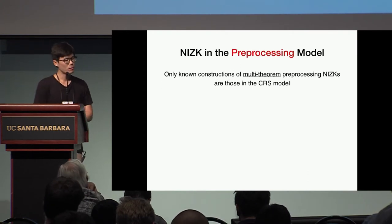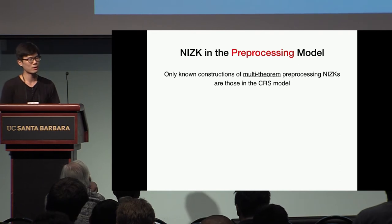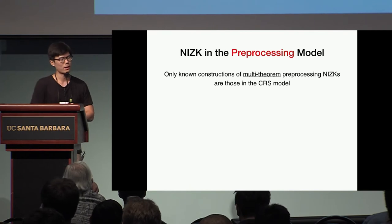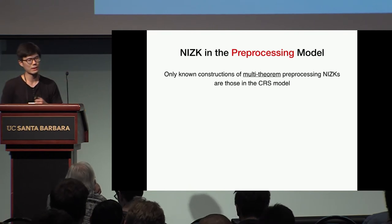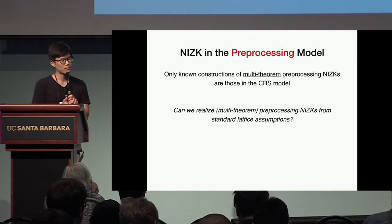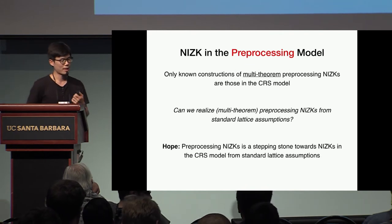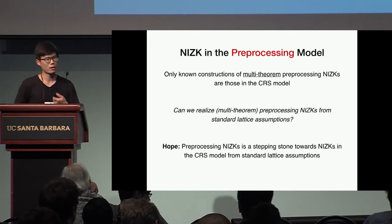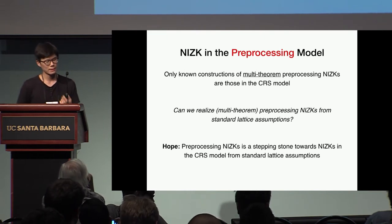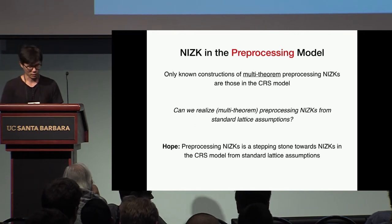The only known constructions for multi-theorem pre-processing NIZK are actually the constructions in the CRS model. Since we do not know how to construct NIZK from standard lattice assumptions in the CRS model, we can naturally ask: can we realize multi-theorem pre-processing NIZK from standard lattice assumptions? The hope is that constructing pre-processing NIZK from lattice assumptions can be used as a stepping stone towards constructing NIZK in the CRS model from standard lattice assumptions.